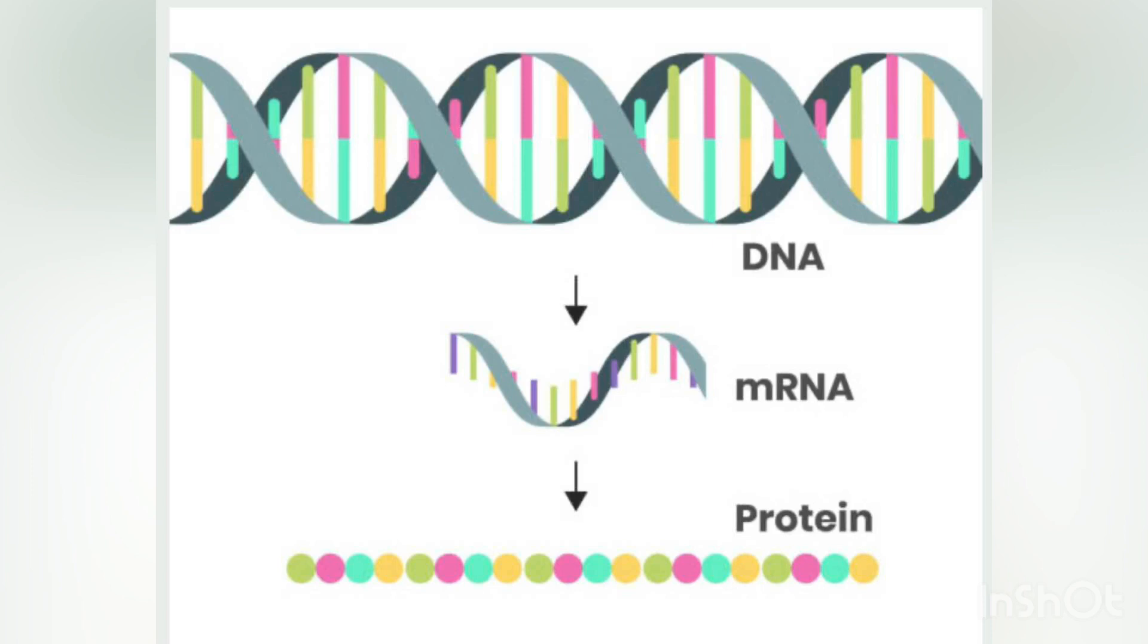Image and signal processing allow extraction of useful results from large amounts of raw data. In the field of genetics, it aids in sequencing and annotating genomes and their observed mutations.